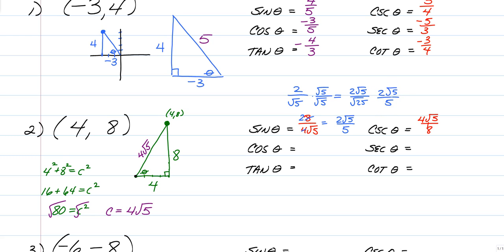That's your reminder on how to get rid of a radical in the denominator — it's called rationalizing your denominator. For the cosecant, we just simplify 4 over 8. The radical is already on top, so we're good to go. This is just going to be the square root of 5 over 2.